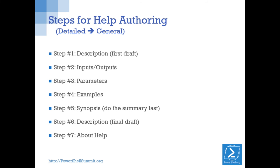This is the order in which I usually write help — not the order that help is listed. I go from specific to general. I write a really quick first draft of the description, then figure out what I'm getting and returning, then go into the details of my parameters, write my examples, then the synopsis last because it's a summary. Then I go back and fix my description, and finally write the about help — about help is last because it's rarely about one function; it's about how to use a bunch of functions together to do a task.